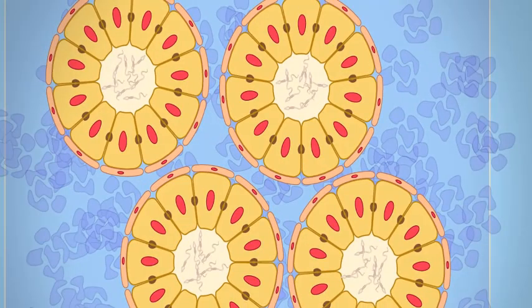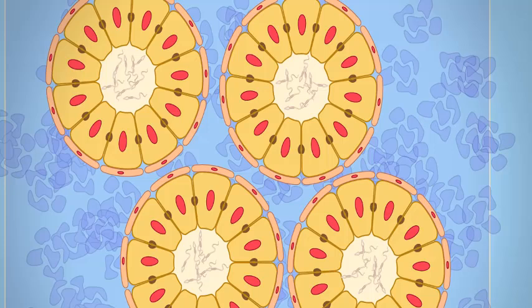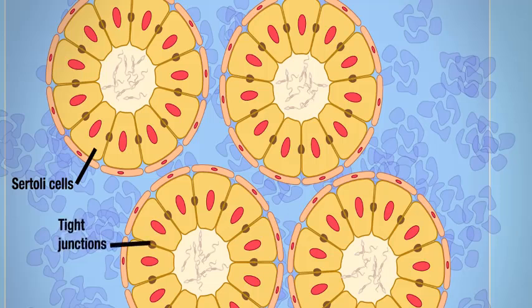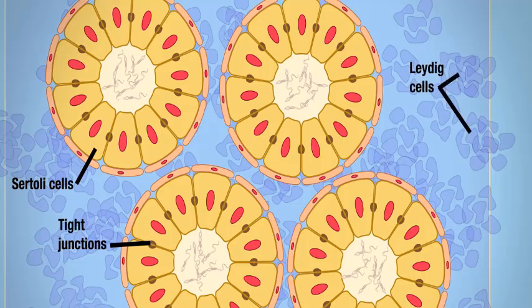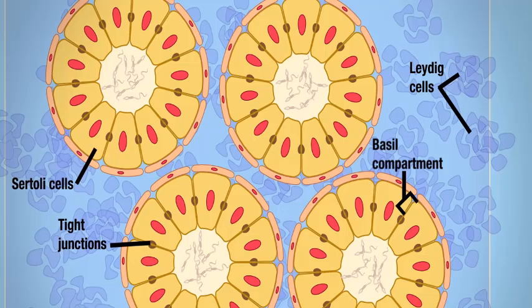In order to do this, we need to zoom in on the seminiferous tubule and take a cross section through the tubule. Imagine taking a garden hose and cutting it in half. This would be similar to cutting the tubule in half and looking at what's inside. The lumen of the seminiferous tubule is lined by cells called Sertoli cells. These Sertoli cells are connected via tight junctions. Lining the outside of the Sertoli cells is a layer of smooth muscle. Outside of the Sertoli cells are the Leydig cells. These are all the cells that are really important. In addition to these structures, you will need to be familiar with the following compartments.